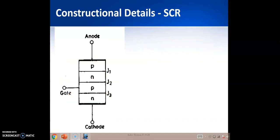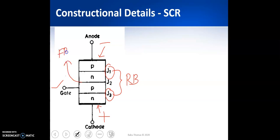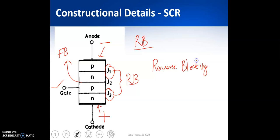Now we analyze the device with the anode given negative and cathode given positive, with the gate still in open condition. When negative is applied to the p-type material and positive to the n-type material, junctions J1 and J3 both become reverse biased while junction J2 is forward biased. J2's forward bias allows a small amount of carriers to pass, but J1 and J3 block them. Only a small leakage current flows, insufficient for conduction. This is known as the reverse blocking state or off state of the SCR.